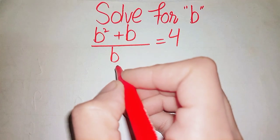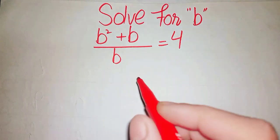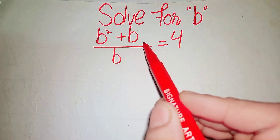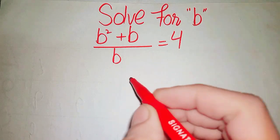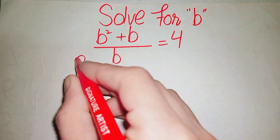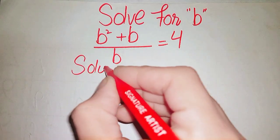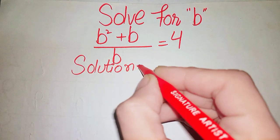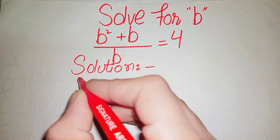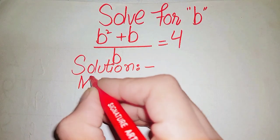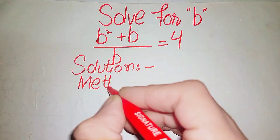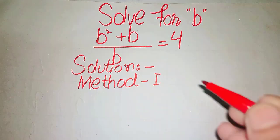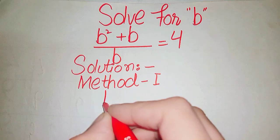Hi guys, welcome to my channel. For solving this nice math olympiad algebra equation — (b squared + b) over b equals 4 — we are going to apply two methods.